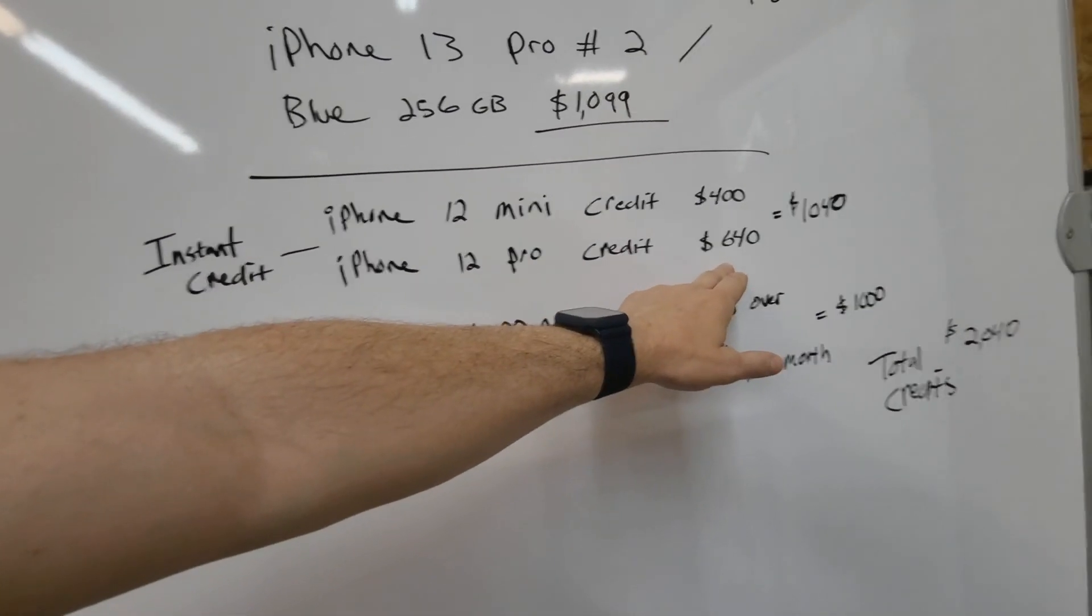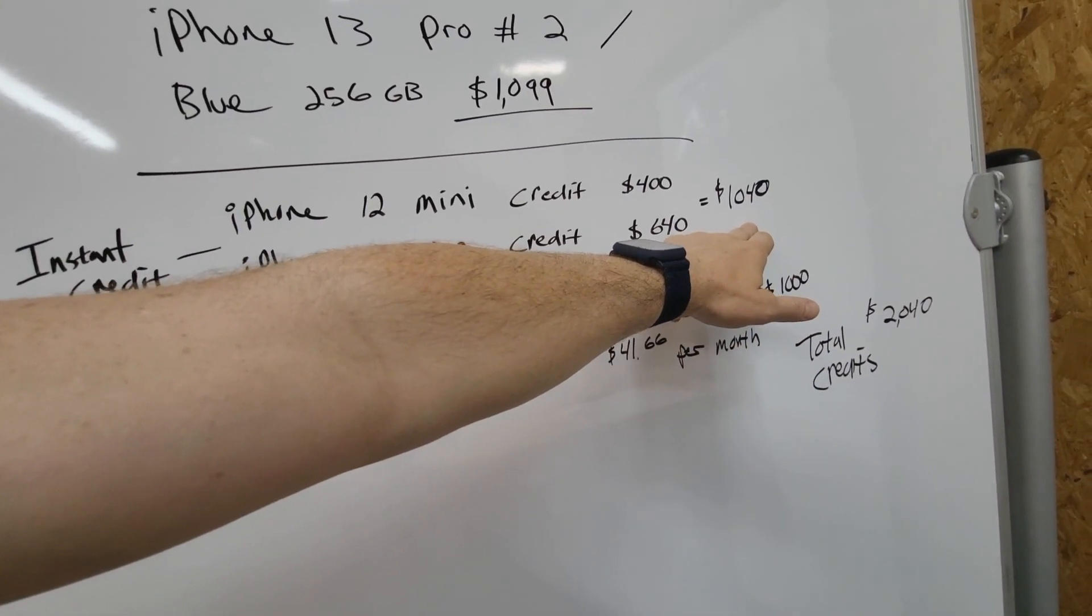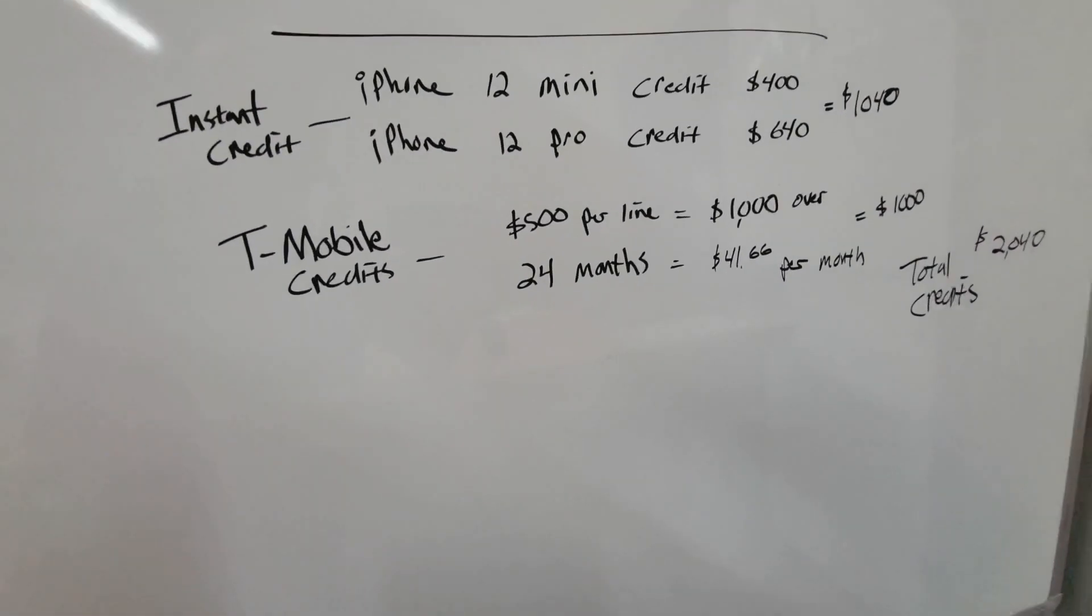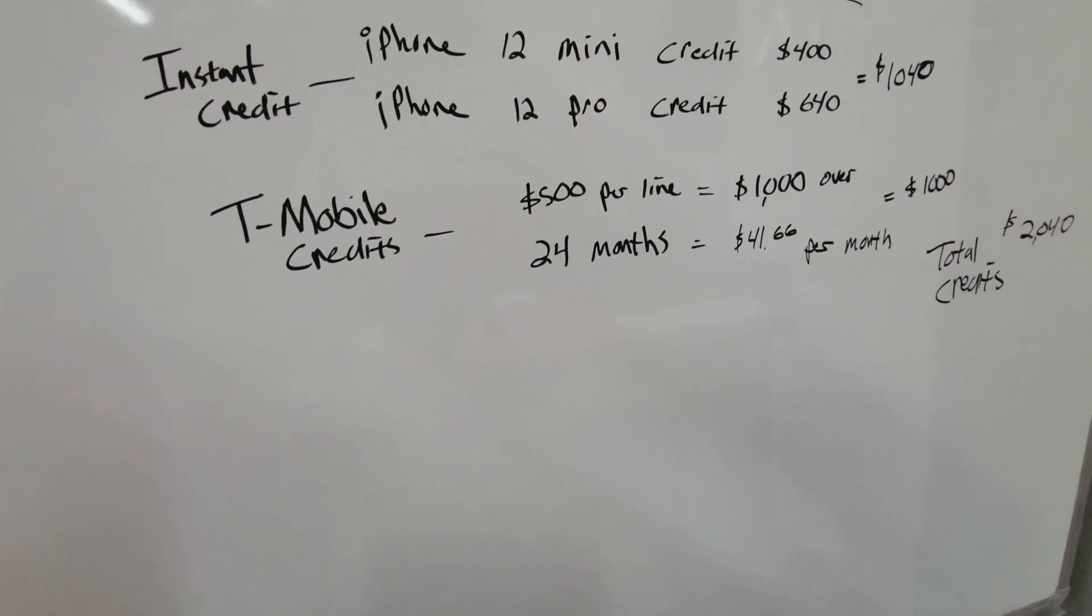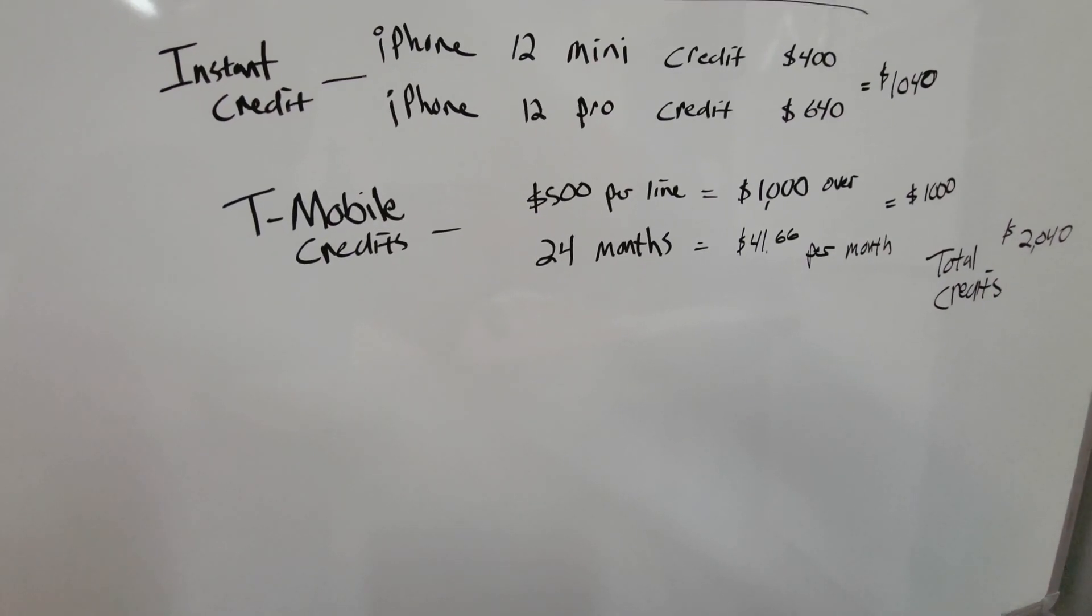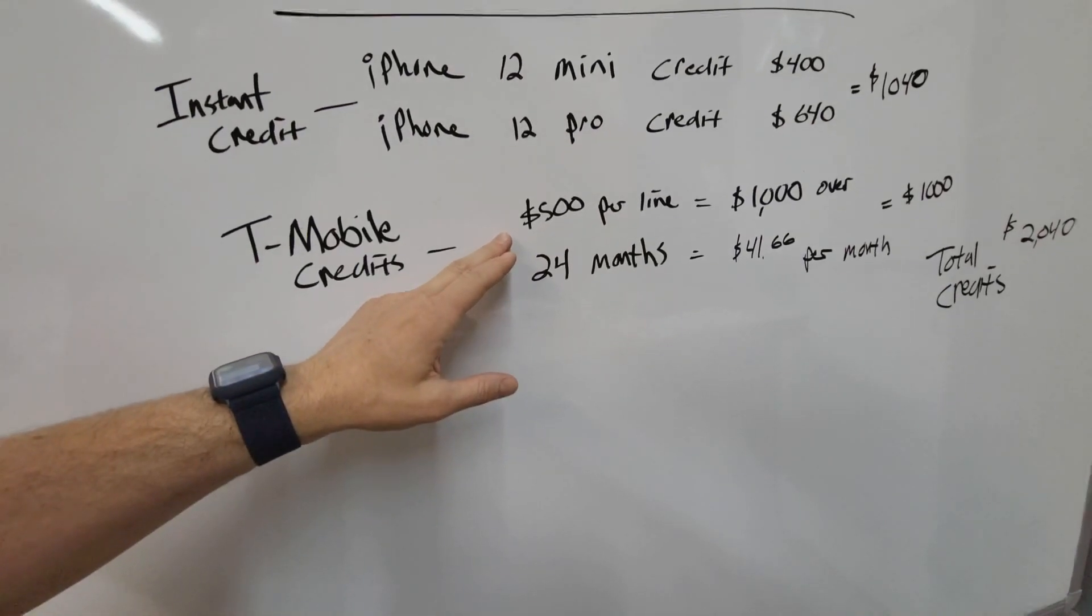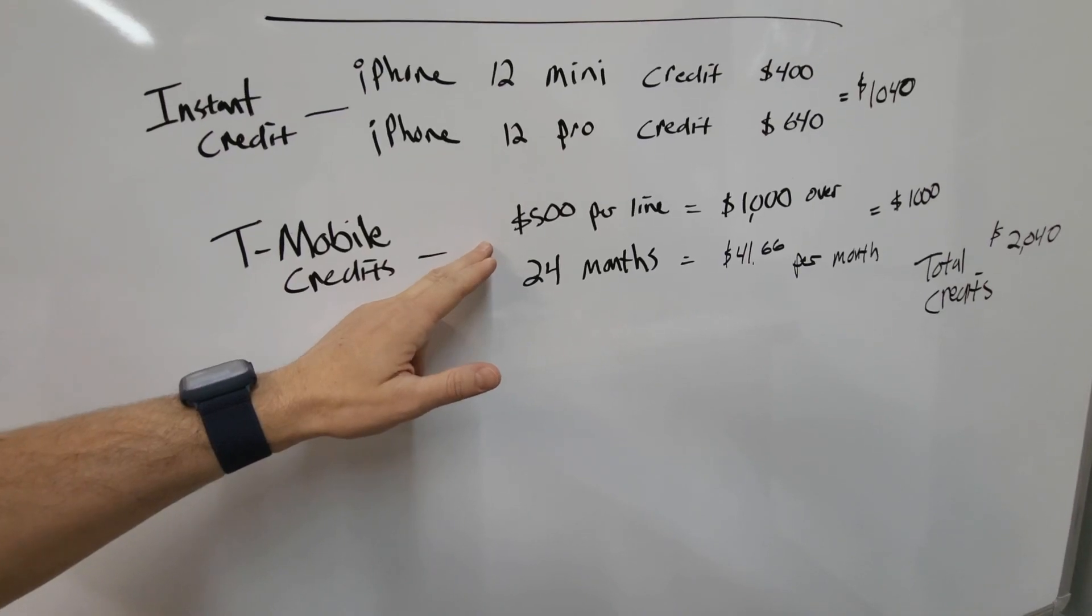Now, because we're T-Mobile customers and we're on the correct price plan, if we activate these phones with T-Mobile, which we're going to do anyway, T-Mobile is going to give us $500 per line. I already double-checked they are going to do $500 per line.